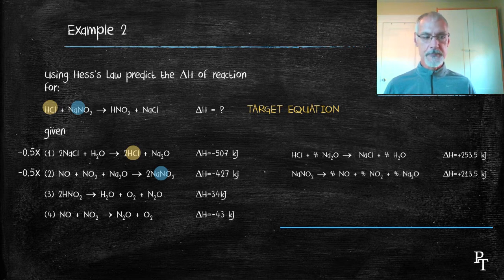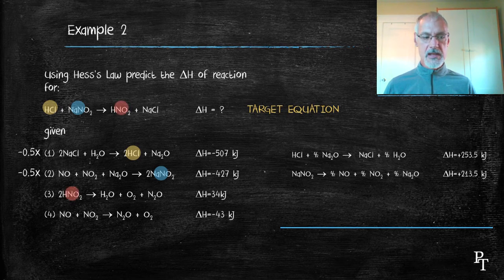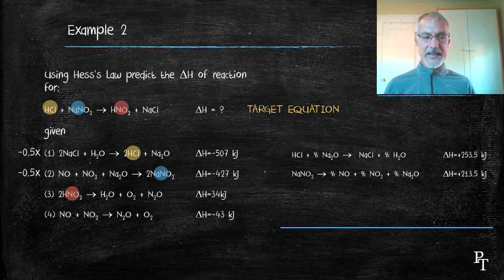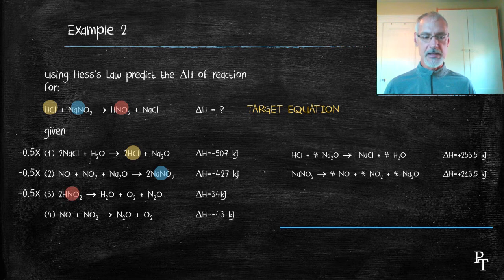Now equation number three, I notice HNO2 common, but again, they're on the wrong side and the coefficient is off. So I need to also multiply by negative a half again.